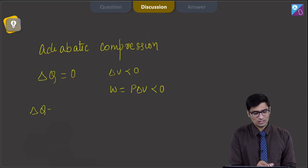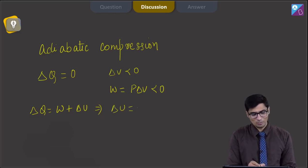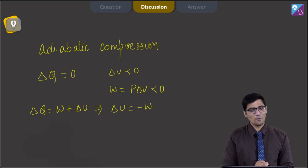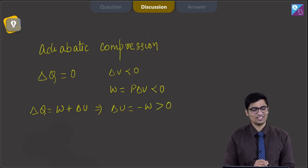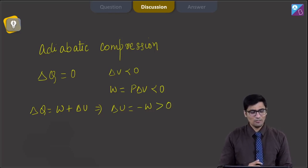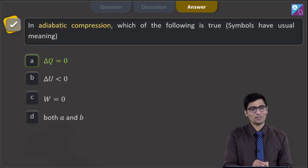As we know that delta Q is equal to W plus delta U, and since delta Q is 0, we can write that delta U is equal to minus W. Since work is less than 0, delta U will be greater than 0. Therefore, looking at all the options, the only correct option is option number A.